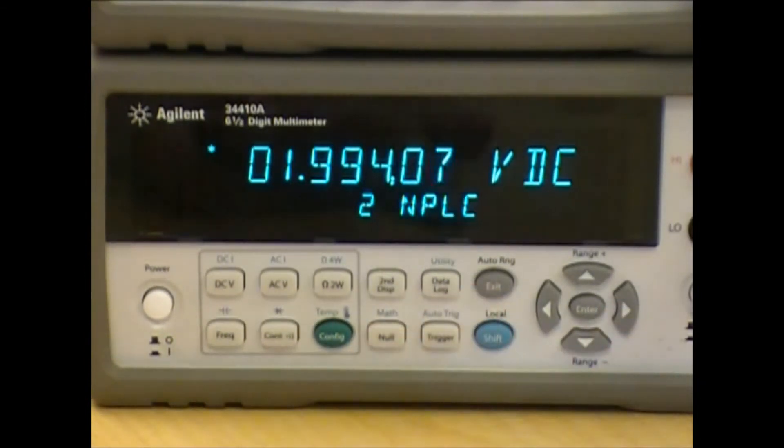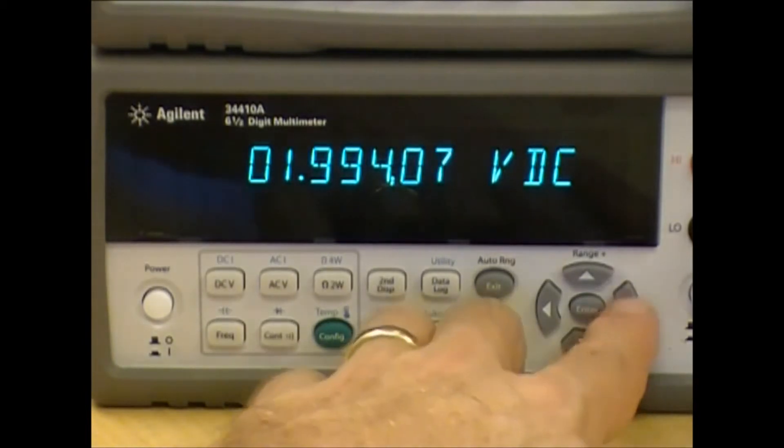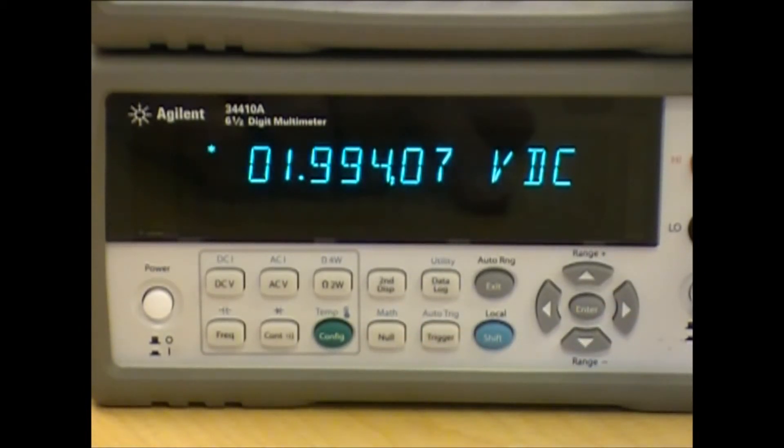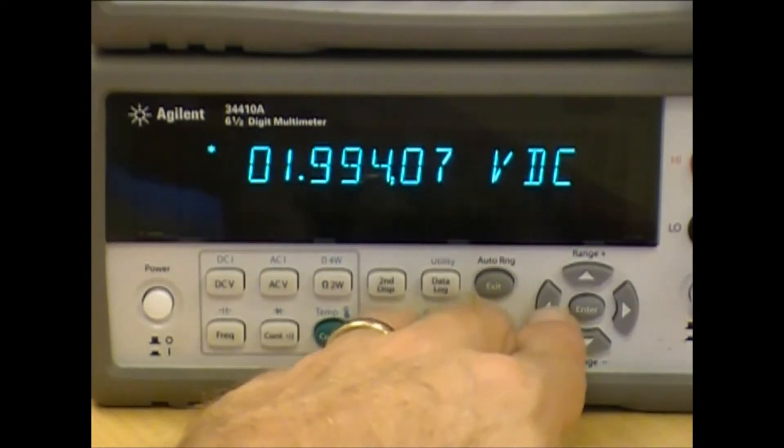The right and left arrows actually change the number of power line cycles. You can see I changed the number of power line cycles to 2. You can change it to 10. As long as we have an integer greater than 1 multiple of power line cycles, we get a stable DC measurement and we reject the AC power signal.